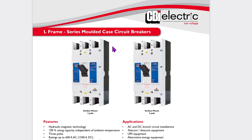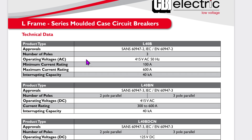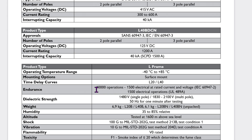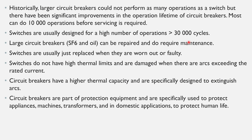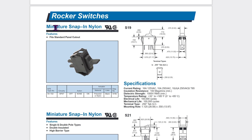When choosing circuit breakers, you can view the specifications and see the number of operations available. For example, this circuit breaker which can handle a maximum current of 600 amps can offer 10,000 mechanical operations, 1,500 of which are at rated current. Switches are usually designed for a high number of operations exceeding 30,000 cycles.